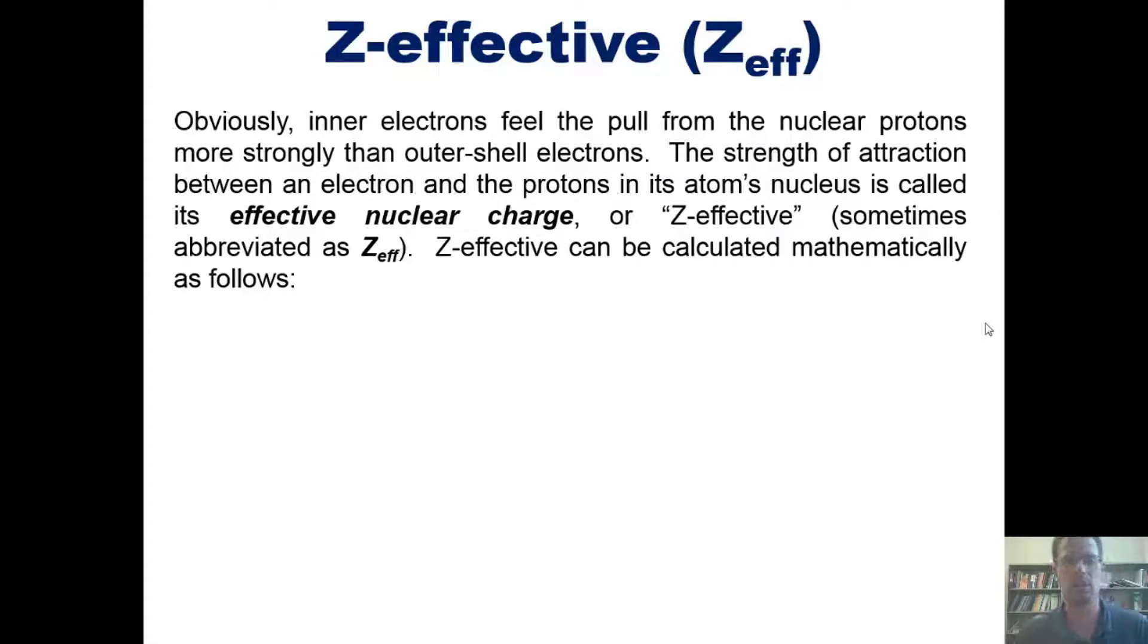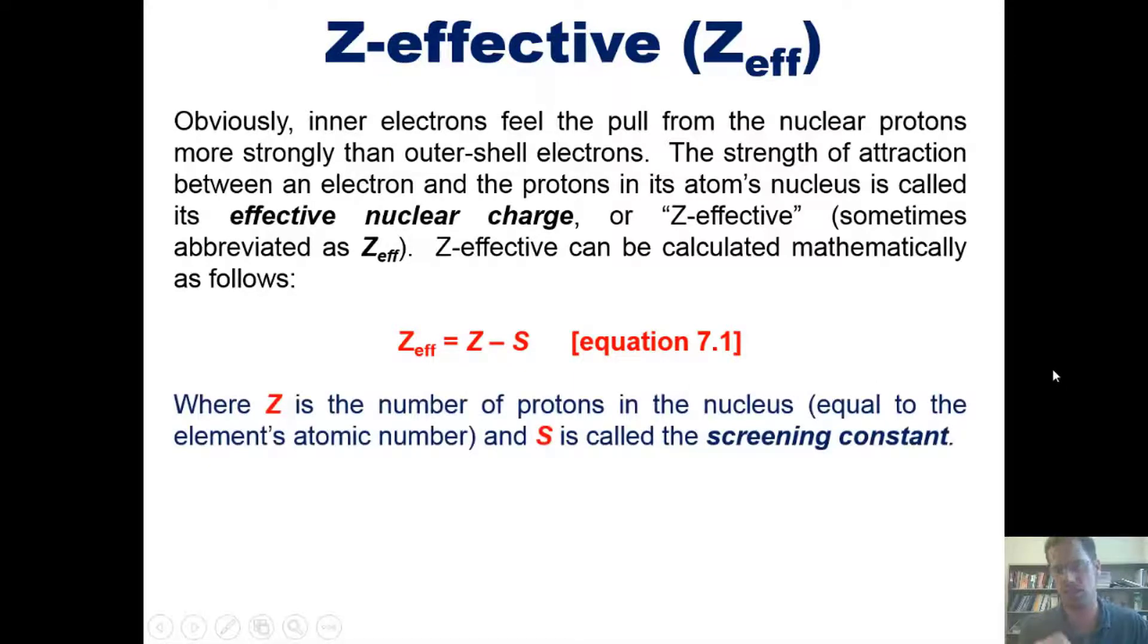The strength of attraction between an electron and the protons in its atom's nucleus is called its effective nuclear charge, or Z-effective, which is sometimes abbreviated as Z-E-F-F, and I sometimes just call it Z-eff. Z-effective can be calculated mathematically using this equation: Z-eff equals Z minus S, where Z is the number of protons in the nucleus, which is always equal to that element's atomic number, and S is something called the screening constant.